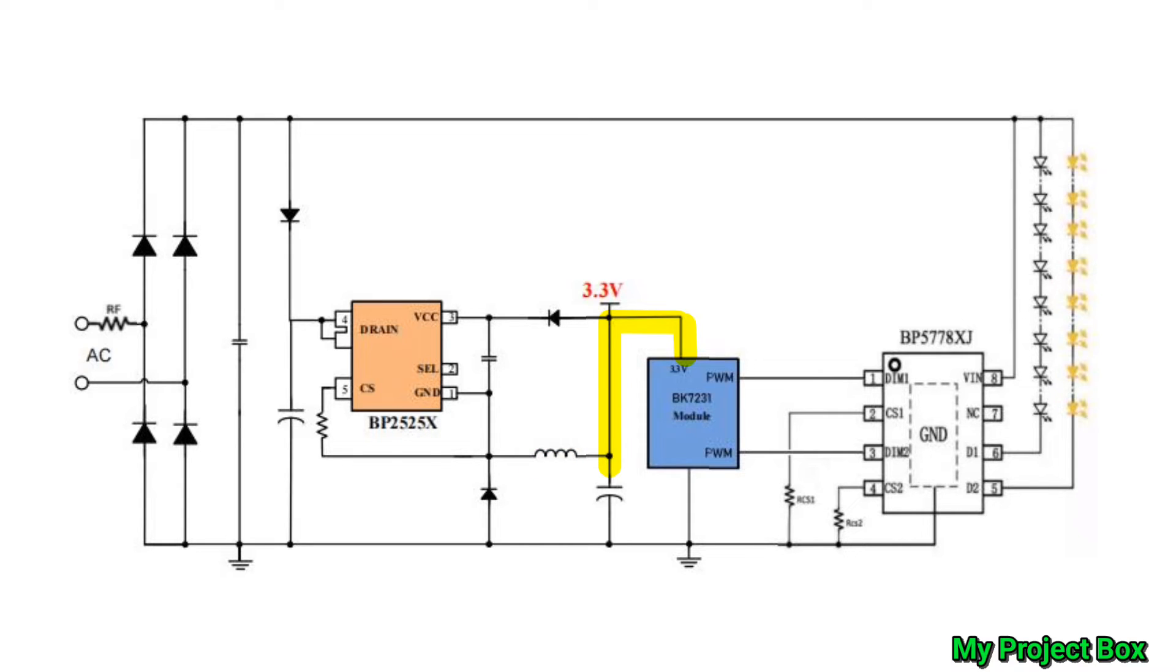That then goes to our Wi-Fi module, which has two PWM channels which do the dimming for the cold white filaments and the warm white filaments, respectively. And then those two channels feed into the dimming inputs of our Bright Power linear regulator chip that drives the LED filaments. And it's a BP-5778.